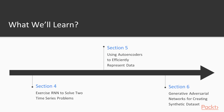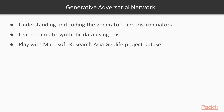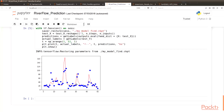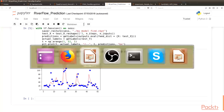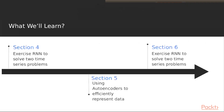Section 6: Generative Adversarial Networks for creating synthetic datasets. Here we learn how to create synthetic datasets and how to code generators and discriminators. We build up the generator and discriminator in detail, covering the loss functions, computations, and predicting how our values turn out.